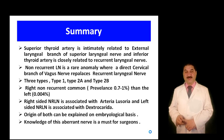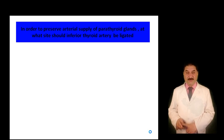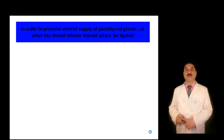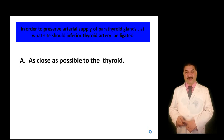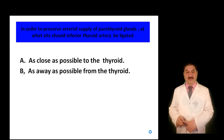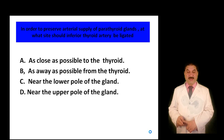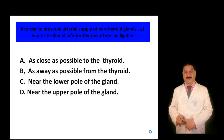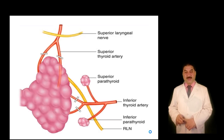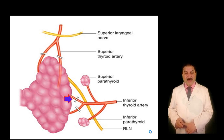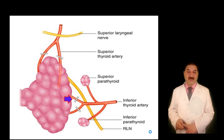Quiz question: In order to preserve arterial supply to the parathyroid gland, at what site should the inferior thyroid artery be ligated? A: as close as possible to the thyroid gland; B: as far as possible from the thyroid gland; C: near the lower pole of the thyroid gland; D: near the upper pole of the thyroid gland. A is the correct option, because when we ligate the inferior thyroid artery as close as possible to the thyroid gland, we preserve both the recurrent laryngeal nerve and the blood supply to the parathyroid glands.